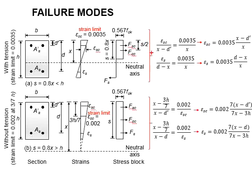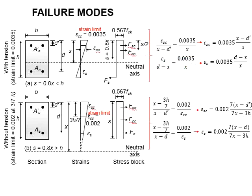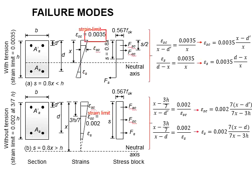The same concept is applied for the tension steel. Since the line is proportional, we are looking at two triangles. The strength limit is in comparison with x as written here.